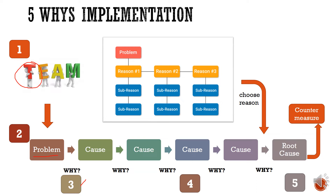Once we have reached five whys, we have identified at least one root cause, and we must discuss and agree on it with our team. We also have to agree on the countermeasure to the root cause. Then we monitor our countermeasures and watch how effectively they eliminate or minimize the problem. We may need to amend, correct, or replace them entirely if our countermeasures are not accurate or effective.